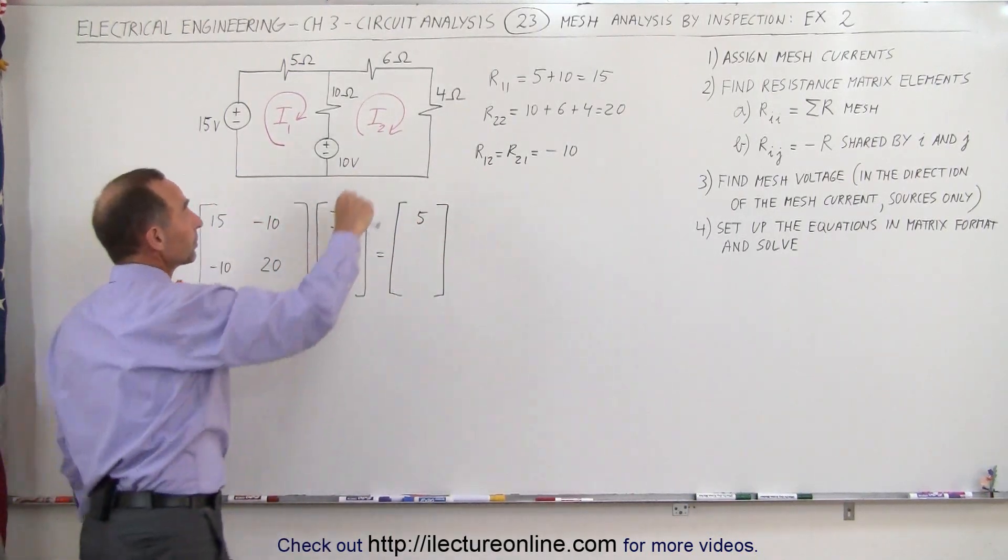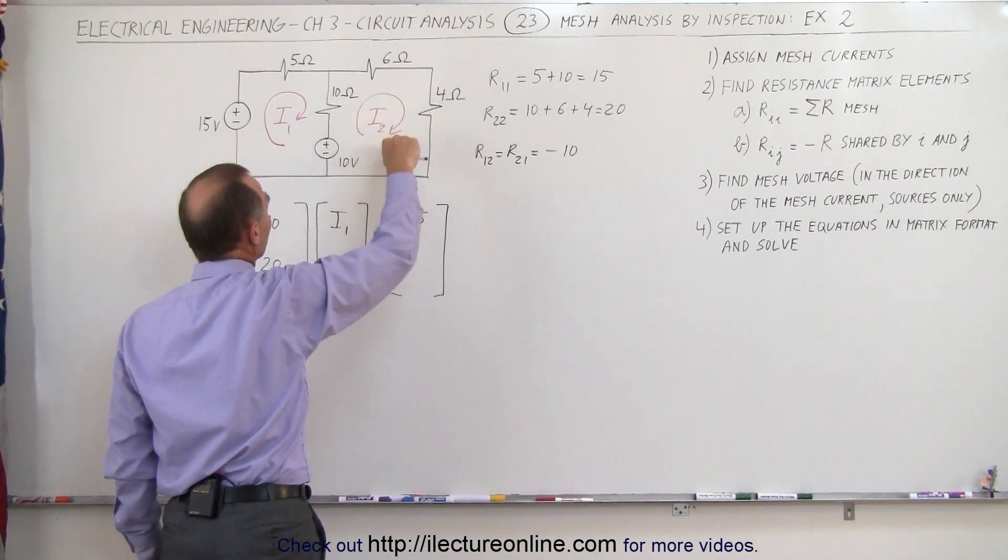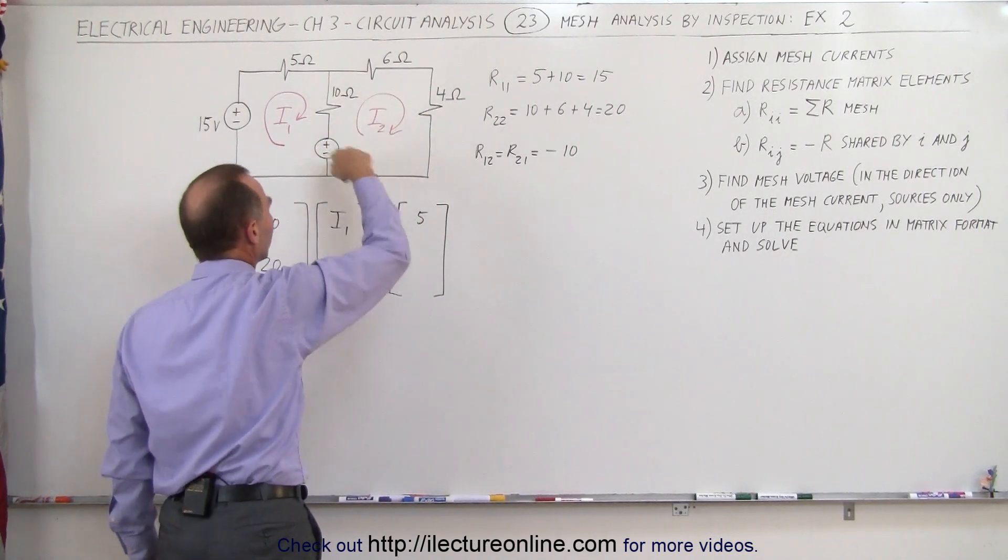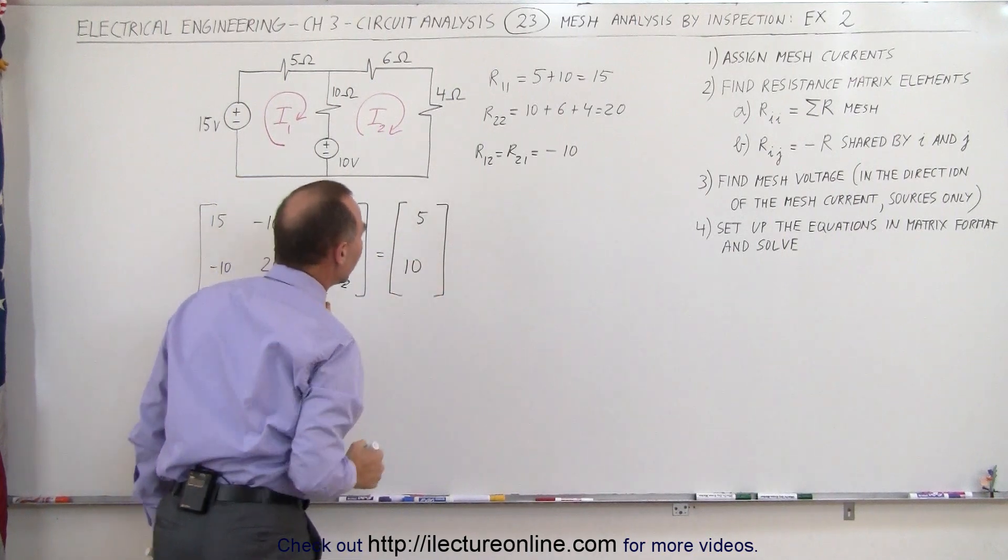For the second loop, same direction as the current. Here we go from the negative to the positive side, but there's only one source, so it's positive 10 for that.